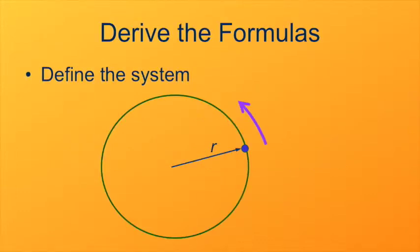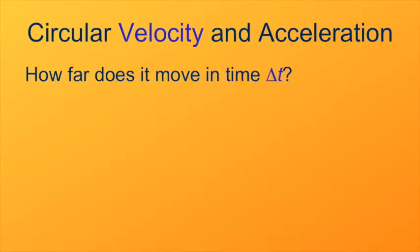First, we'll define the system. I've got a rotation in the counterclockwise direction, which is our typical trigonometric convention, characterized by a radius of the path r. We need to know velocity to understand acceleration, so we need to characterize the velocity. How can we characterize the velocity? It's the rate of change of position, or the change of position divided by the change in time.